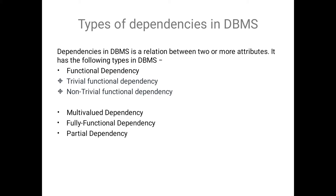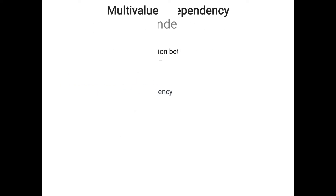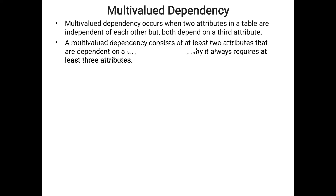We will start with multi-valued dependency. The meaning is already in the name itself. It occurs when two attributes in a table are independent of each other but both dependent on a third attribute. So we consider at least three fields: two fields are independent and both are dependent on the third field.